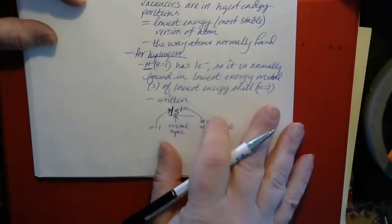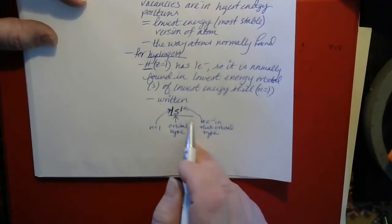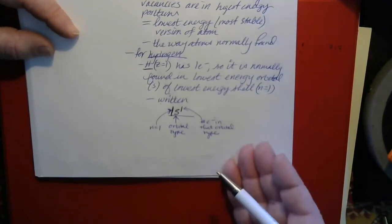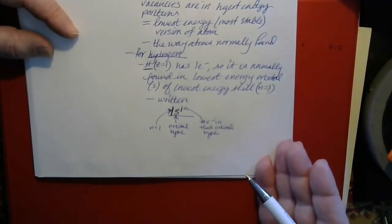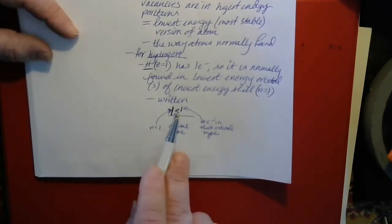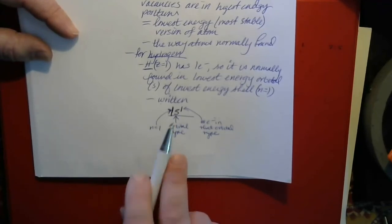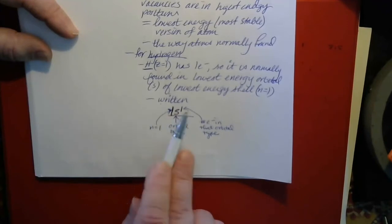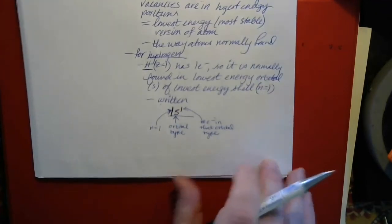Other elements have more electrons. For helium, which has two electrons, you start the same as hydrogen. When you add the second electron, you ask where is the lowest energy position available. The answer is in the S orbital of shell number one, because any given orbital can accommodate a maximum of two electrons. So the second electron goes into the S orbital of shell one, and that configuration is written as 1s2.